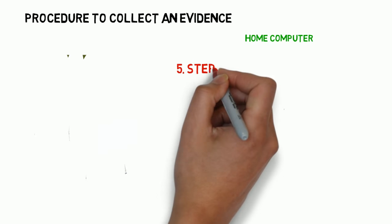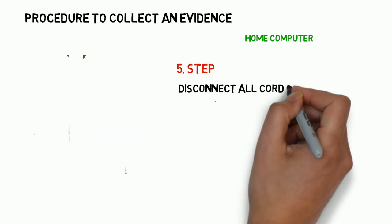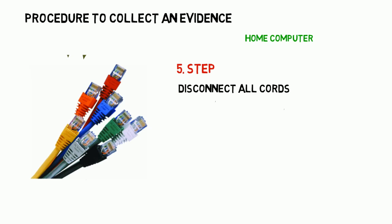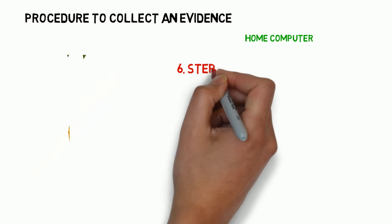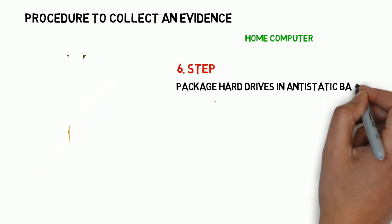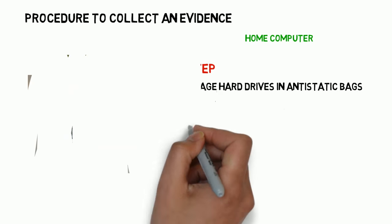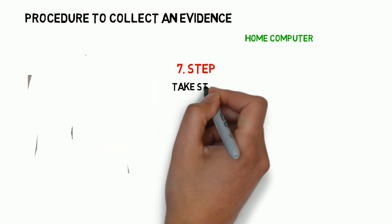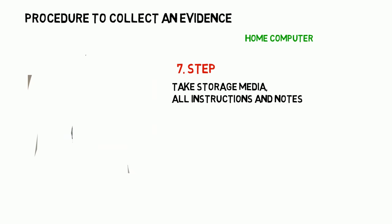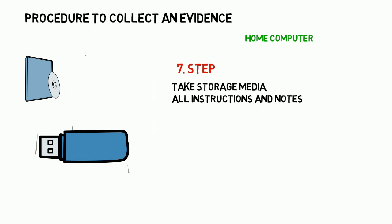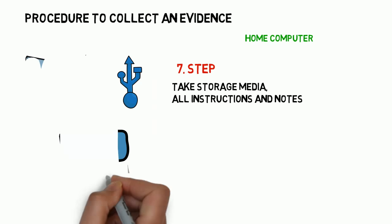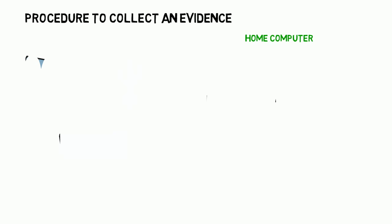In the fifth step, disconnect all cords. In the sixth step, check for RAM and hard drives and package everything within anti-static evidence bags. In the seventh step, take all storage media, keep everything away from magnets, and collect all instruction manuals and notes from the area. Finally, document all the steps used when collecting the evidence.